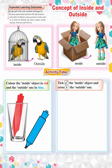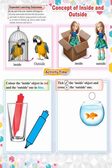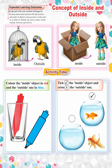Take the inside object and cross the outside one. The fish is in the aquarium, so take the fish. If the fish is not in the aquarium, it is outside the aquarium, so cross the fish.